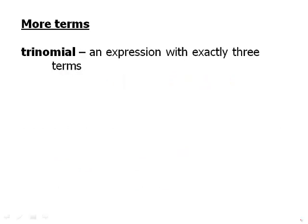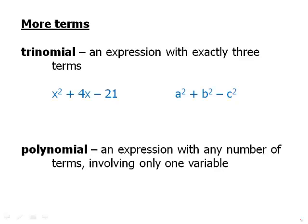A trinomial is an expression with exactly three terms. And those are some examples of trinomials. Now we don't have to worry about what if there are four terms, what if there are five terms. We don't need to worry about the words for those. A polynomial is an expression with any number of terms involving only one variable. So for example, this one here is a polynomial because the only variable is x. This one involves more than one variable. So technically that's not a polynomial.